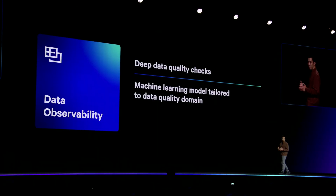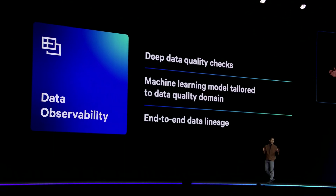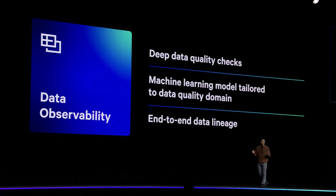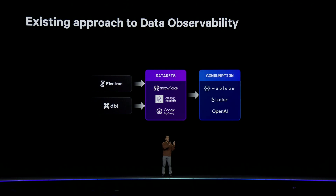What you just saw is a combination of deep data quality checks and machine learning models tailored to the enterprise data quality domain, overlaid on end-to-end data lineage. What do I mean by end-to-end? Existing data observability products typically start from the warehouse, then shift one step to the left or one step to the right. But by starting towards the end and with a limited view, the damage is often already done.